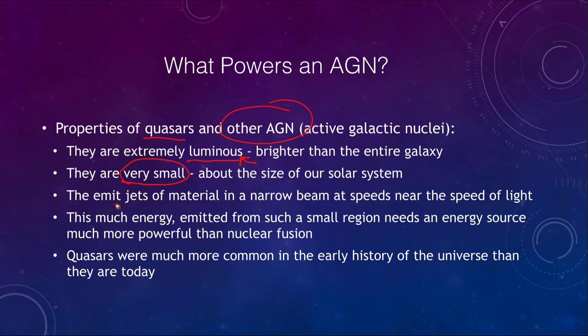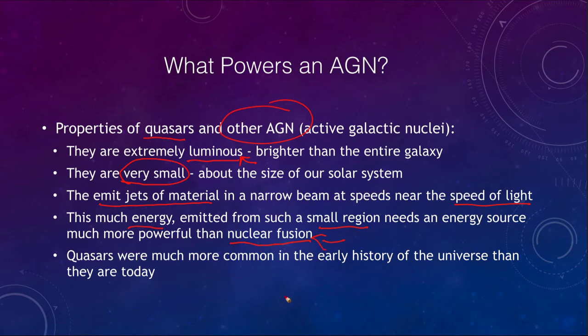They emit jets of material in narrow beams that are very close to the speed of light — another feature requiring a very high energy source. This much energy emitted from such a small region needs an energy source far more powerful than the nuclear fusion that powers the stars.